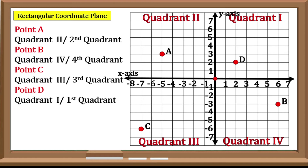Now let us try this point — Point E. Does it lie on the 2nd Quadrant or 3rd Quadrant? We say that Point E lies on the X-Axis. What about Point F? Point F lies on the Y-Axis.